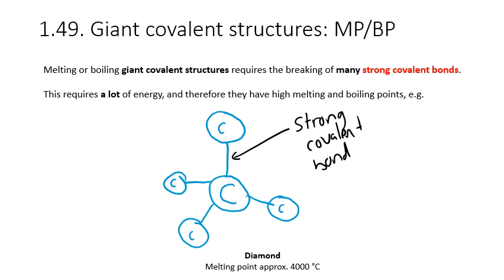Unlike simple molecular structures — where melting and boiling only requires overcoming the weak intermolecular forces and not breaking the strong covalent bonds — when you melt or boil giant covalent structures, you do indeed have to break those bonds. These bonds are very strong and there are very many of them, so it requires a lot of energy. Therefore, they have high melting and boiling points. For example, diamond has a melting point of approximately 4,000 degrees C.